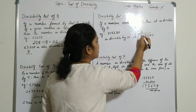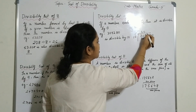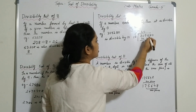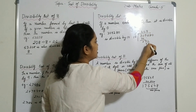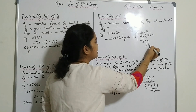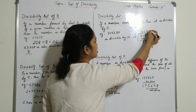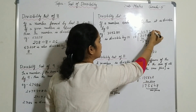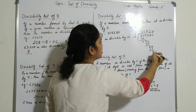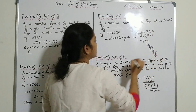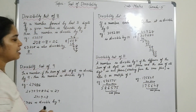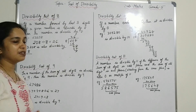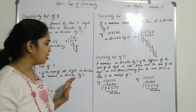Let's verify: 309280 divided by 10. We can check this and confirm it is divisible by 10, giving no remainder. Now we will learn the divisibility test of 11.